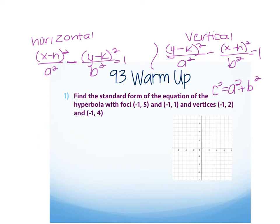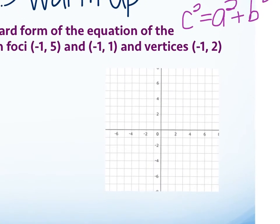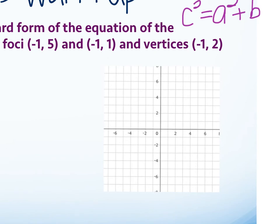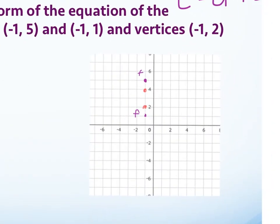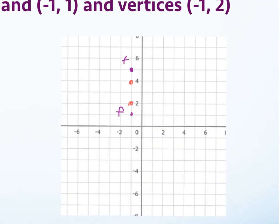Find the standard form of the equation of the hyperbola with foci at negative 1, 5 and negative 1, 1, and vertices at negative 1, 2 and negative 1, 4. If I plot what they give me, those are your foci and those are your vertices.